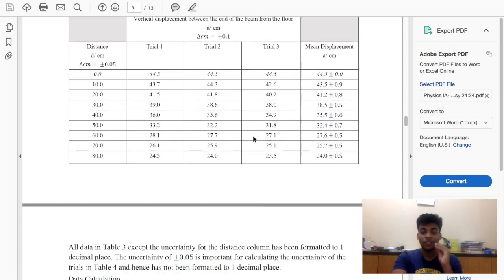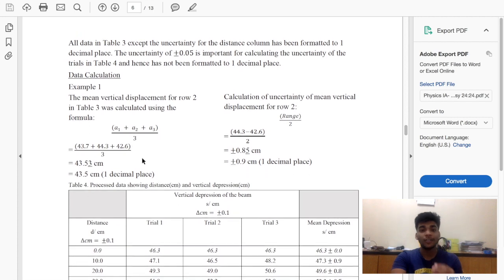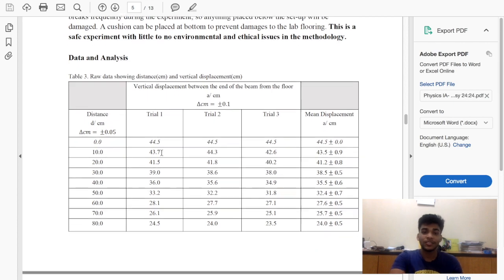So put every single calculation, even the ones you do on your calculator. Put it in there. Put it on the IA. This is a processed data table: vertical depression of the beam.